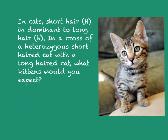Here is our example. In cats, short hair is dominant to long hair. The dominant allele is always expressed in upper case, and the recessive allele is always lower case. So let's figure out how to solve this: in a cross of a heterozygous short-haired cat with a long-haired cat, what kittens would you expect?